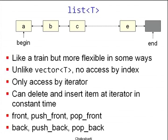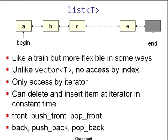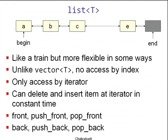The last one we'll look at is a list. It has a beginning and an end — end is an illegal iterator position you shouldn't read. The beginning points to some element A, and current elements are A, B, C, E. It's like a train where coaches are linked. Unlike vector<T>, list<T> does not give access by index — you cannot say 'give me the 24th element'. You have to walk through, just like in a train you have to keep walking until you find the correct compartment.